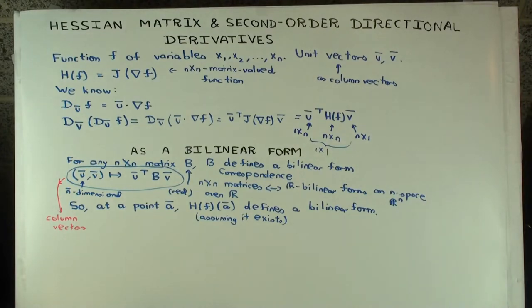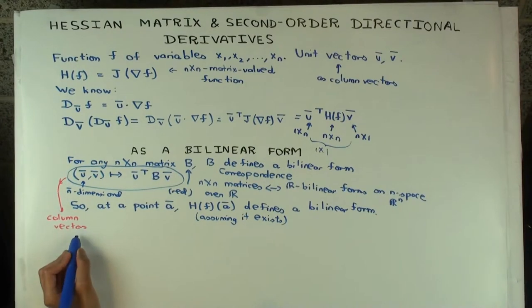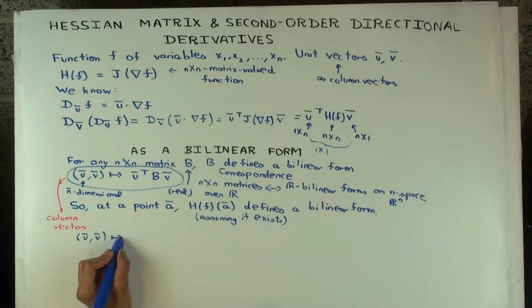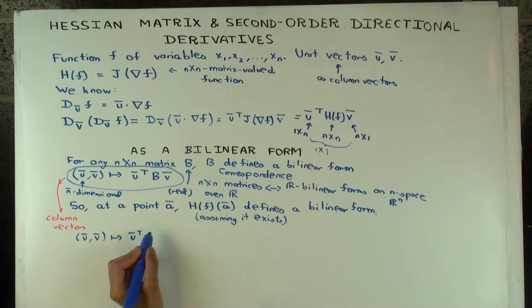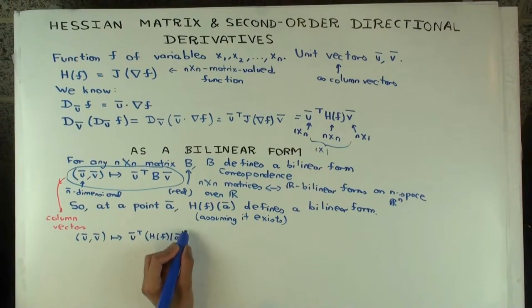Then that defines a bilinear form. What's that bilinear form? Defined by H_f of A. It's U transpose times H_f of A times V.